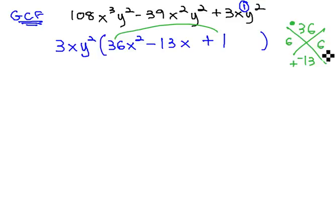One idea might be 6 times 6 is 36, but that adds to 12, not 13. Another idea that multiplies to 36 is 9 times 4. Notice if they are both negative, 36 is negative 9 times negative 4, and when we add them, we get negative 13.